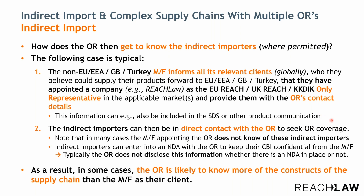This information can in some cases also be included in the safety data sheet or in other product communications. Essentially, the information should come from the upstream manufacturer or formulator to support the only representative. These indirect importers can then directly contact the only representative to seek coverage. In those cases, we need to have permission to cover indirect imports, and if the indirect importers want a confidentiality agreement, this is arranged — and we would not disclose information to the upstream manufacturer or formulator who has appointed us as the only representative.